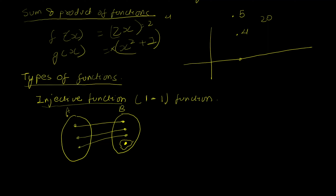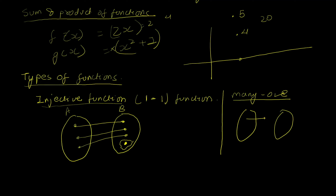Opposite to injective functions are many-to-one functions. They don't have a special name like injective, but the idea is that many inputs may create the same outputs, and at least one many-to-one relationship must exist in a many-to-one function.